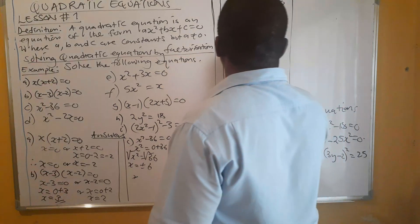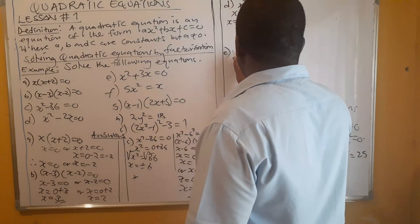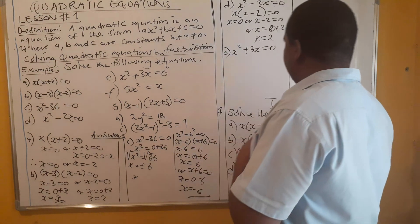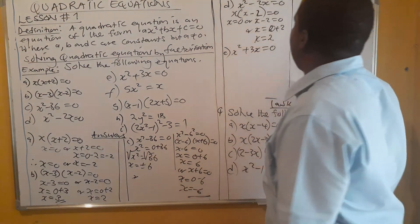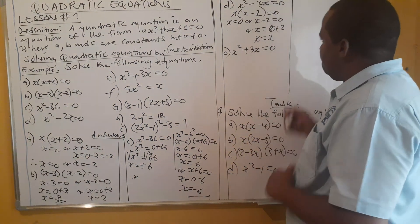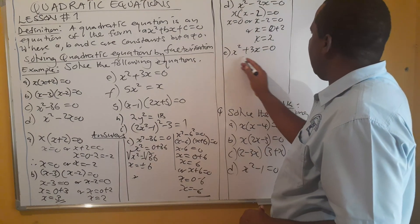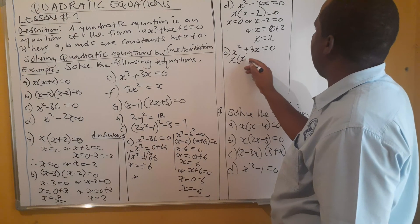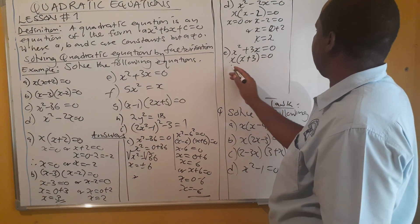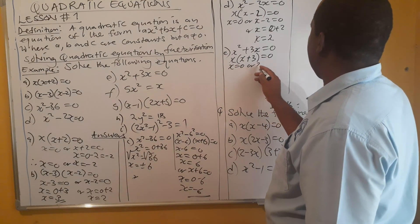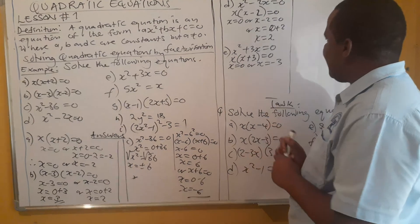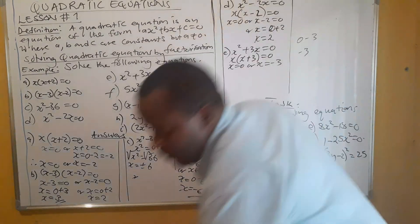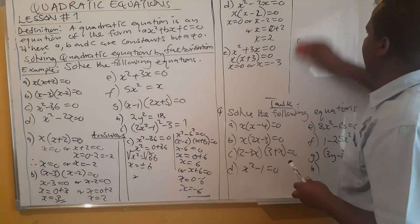For E: x squared plus 3x equals zero. Again, check for a common factor — but it is not right to divide through by it, otherwise you only get one solution. Our common factor is x, so we factor to get x(x plus 3) equals zero. This means x equals zero or x equals negative three.